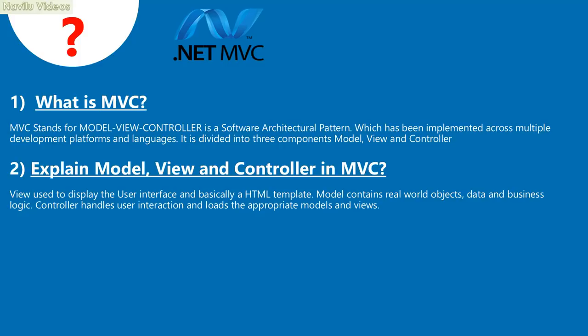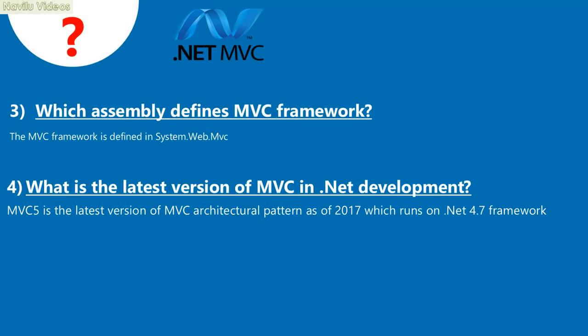MVC stands for Model-View-Controller. It is a software architectural pattern implemented across multiple development platforms and languages. It is divided into three components: Model, View, and Controller. View is used to display the user interface and is basically an HTML template. Model contains real-world objects, data, and business logic. Controller handles user interaction and loads the appropriate models and views.